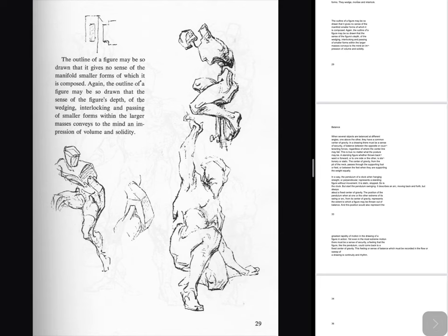Balance: When several objects are balanced at different angles, one above the other, they have a common center of gravity. In a drawing there must be a sense of security, of balance between the opposite or counteracting forces, regardless of where the center line may fall. A standing figure whether thrown backward or forward, or to one side or the other, is stationary or static. The center of gravity, from the pit of the neck, passes through the supporting foot or feet, or between the feet when they are supporting the weight equally. The pendulum of a clock when hanging straight represents a standing figure without movement. But start the pendulum swinging — it describes an arc, moving back and forth, but always about a fixed center of gravity. The position of the pendulum at one or the other extreme of its swing represents the extent to which a figure may be thrown out of balance, and the greatest rapidity of motion in the drawing of a figure in action. Yet even in the most extreme motion there must be a sense of security — a feeling that the figure, like the pendulum, could come back to a fixed center of gravity. This feeling or sense of balance which must be recorded in the flow or sweep of a drawing is continuity and rhythm.